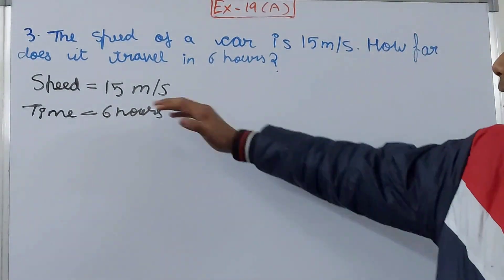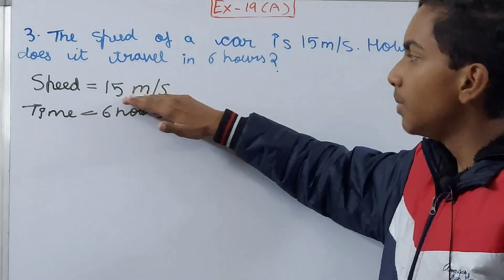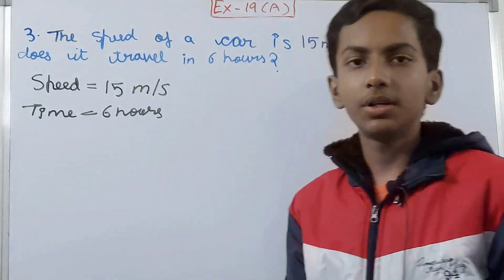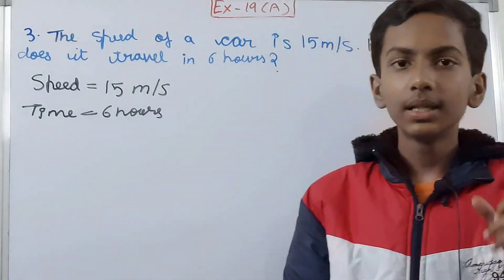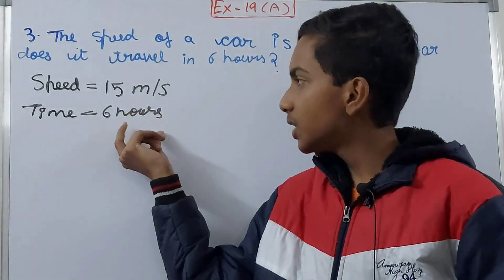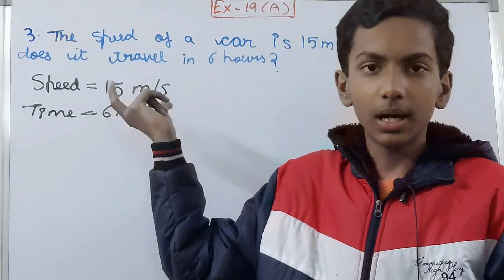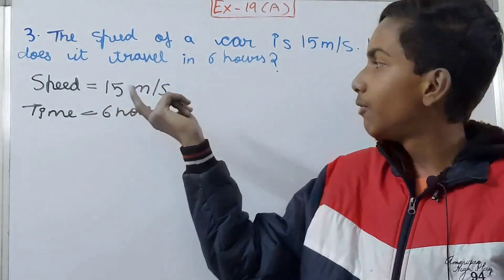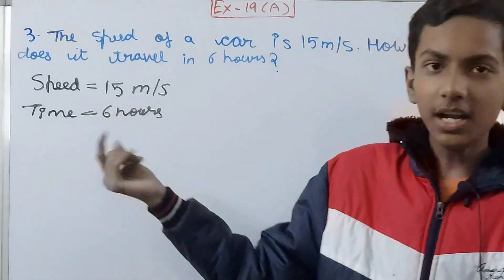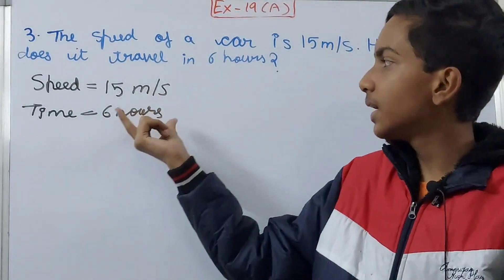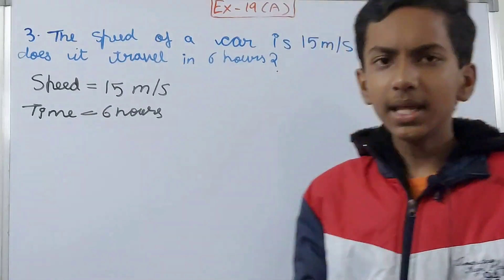Notice that the time is in hours and the speed is in meters per second — this cannot be done directly. Your units have to be the same. If the time is in hours, the speed must be in kilometers per hour. If the speed is in meters per second, the time must be in seconds.